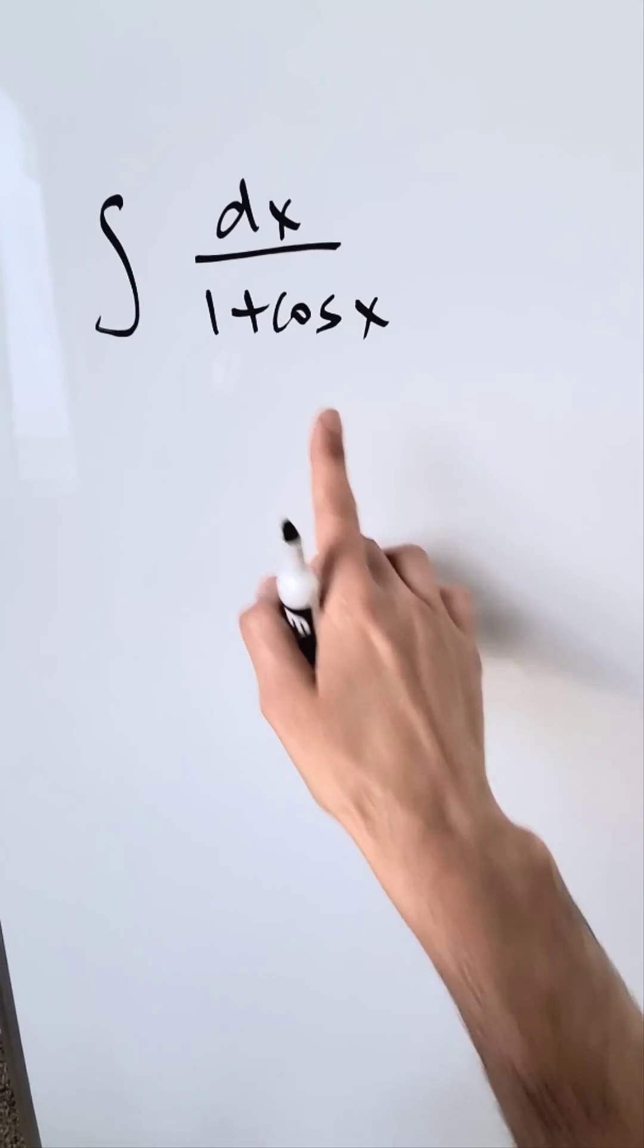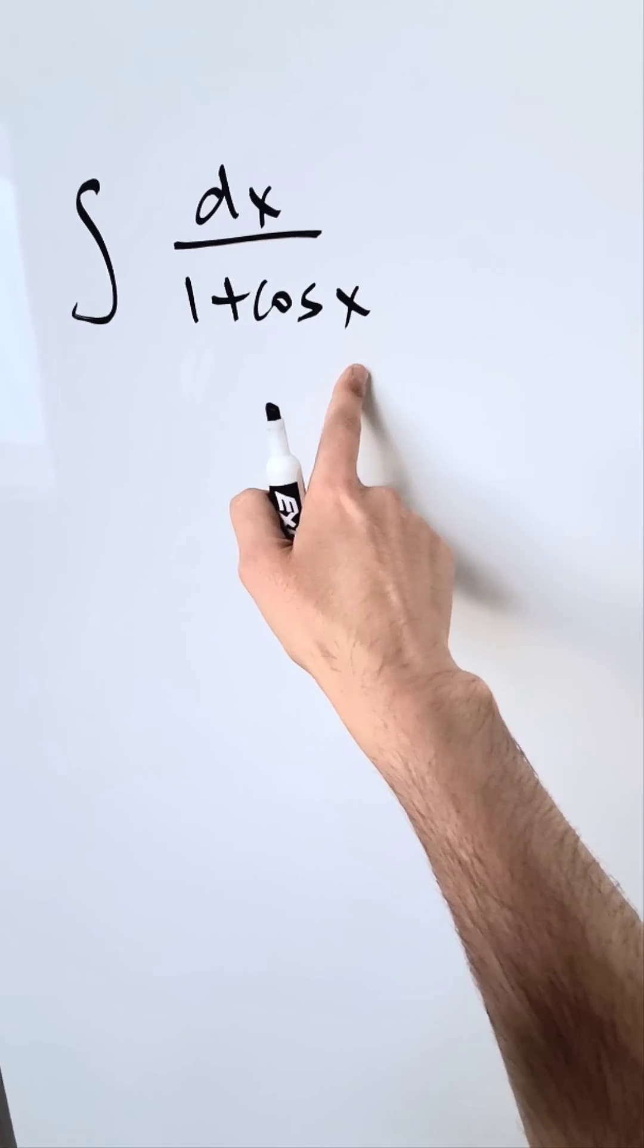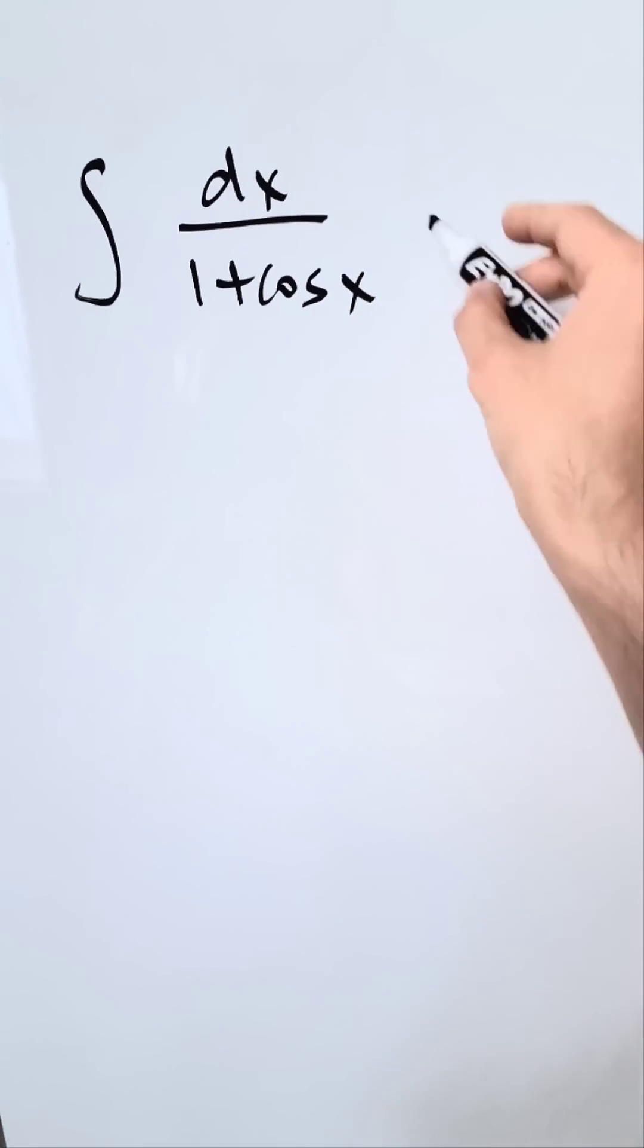Let's solve this indefinite integral. I have 1 over 1 plus cosine x dx. That's my function. How can I start?